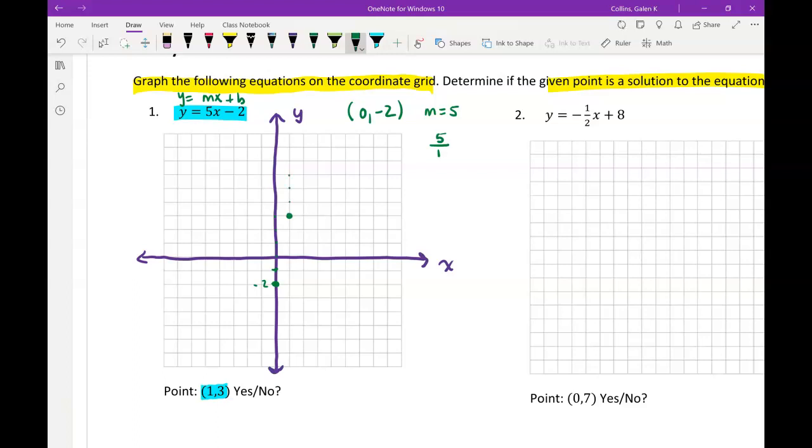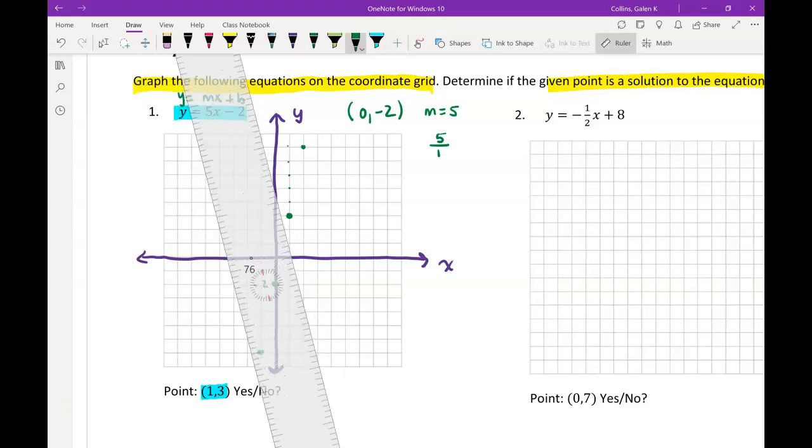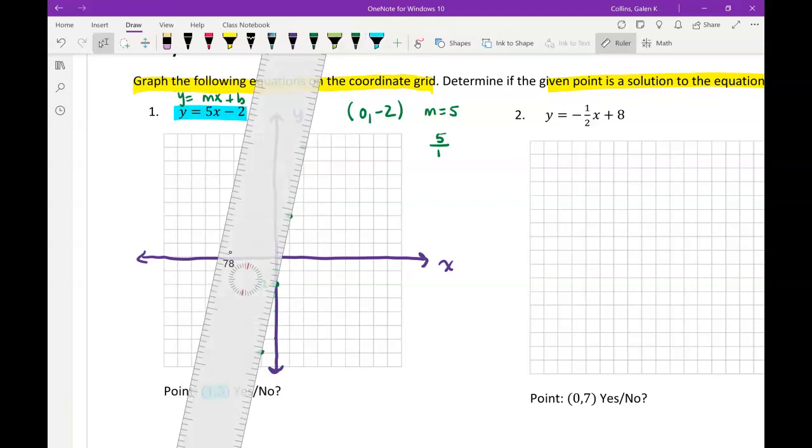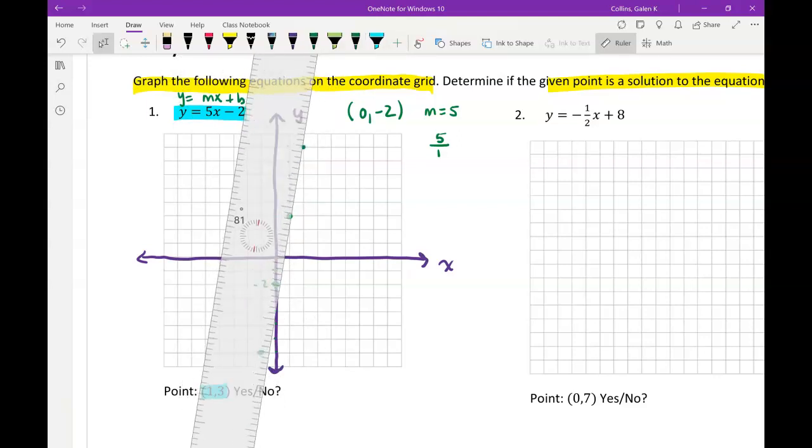You could just get 2 points and use a ruler. I think it helps our graph be precise if we get a few good points. I could also rise down 5, so down 1, 2, 3, 4, 5, and go backwards 1. So remember, if my slope is positive, my line should be increasing, which it is.